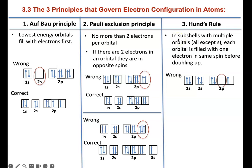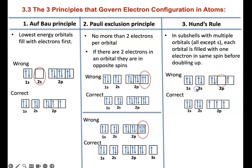Finally, Hund's rule: in a subshell with multiple orbitals — that means every subshell except s, which has only one orbital — each orbital is filled with one electron in the same spin before doubling up. This example is wrong because one orbital hasn't been filled while another has doubled up.